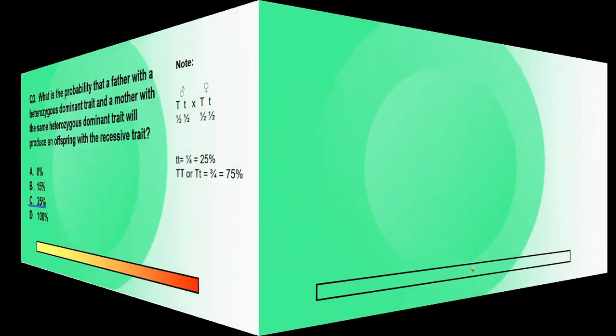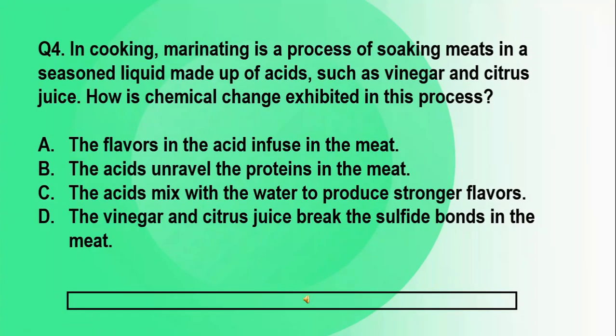Question number four. In cooking, marinating is a process of soaking meats in a seasoned liquid made up of acids such as vinegar and citrus juice. How is chemical change exhibited in this process? A. The flavors in the acid infuse in the meat. B. The acids unravel the proteins in the meat. C. The acids mix with the water to produce stronger flavors. And D. The vinegar and citrus juice break the sulfide bonds in the meat.